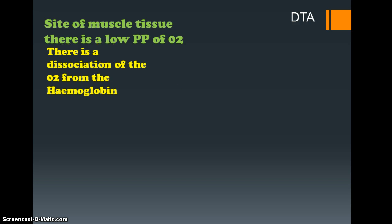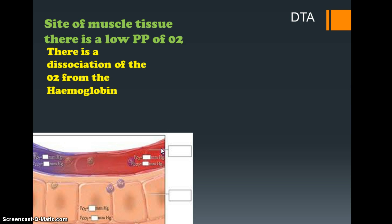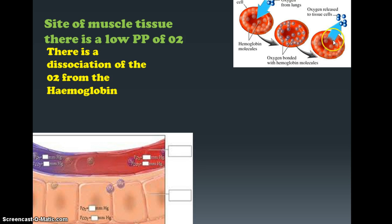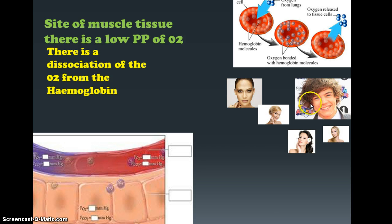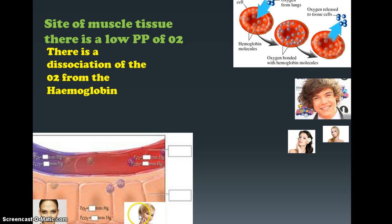At the site of the muscle tissue there is a low partial pressure of O2. As the hemoglobin comes through the capillaries to a site with low partial pressure of O2, there is a dissociation — the hemoglobin releases the O2 into the working muscles. Harry loses some of his O2 molecules. Notice he hasn't lost all of them, which suggests the muscles don't need a lot of O2, implying we're at rest or not working very hard.